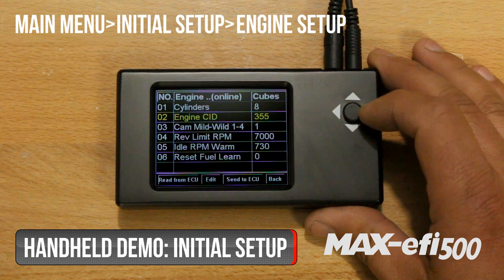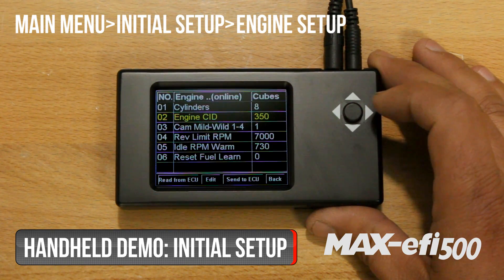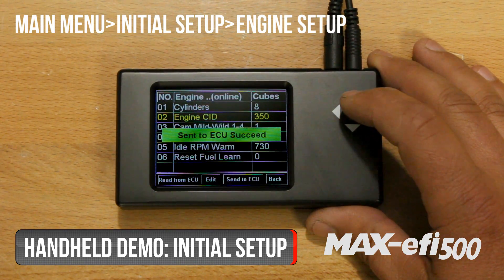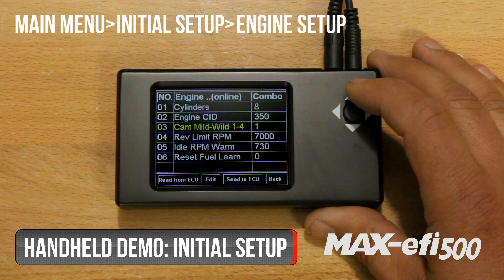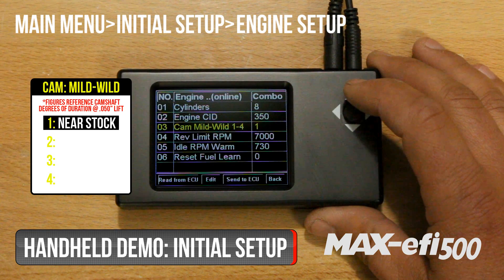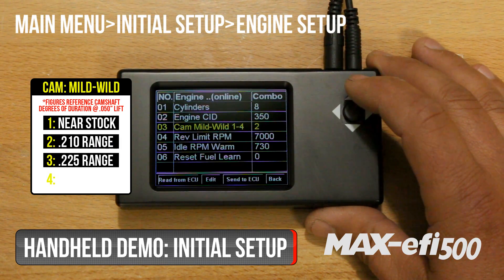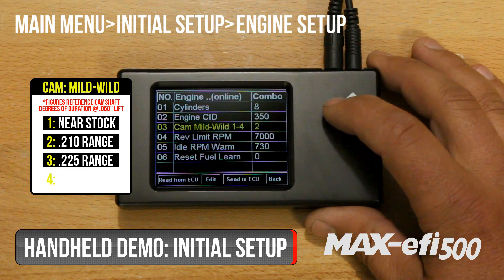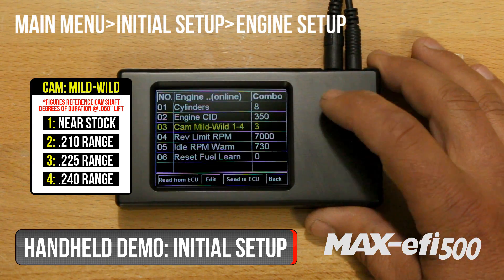Second, you'll enter in your engine's cubic inch displacement. After that, you'll choose the aggressiveness of your camshaft on a scale of 1 to 4. A rating of 1 would be a near stock cam, a 2 would be in the 210 range, a 3 would be around 225, and a 4 would be closer to 240.